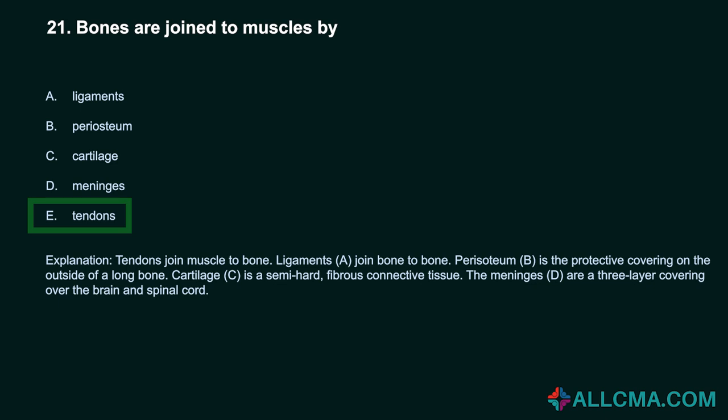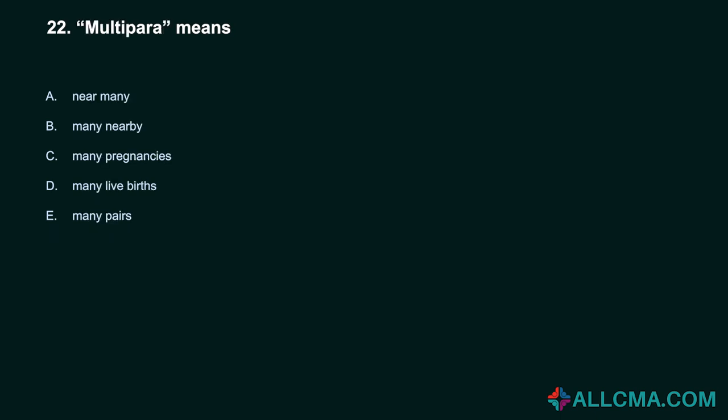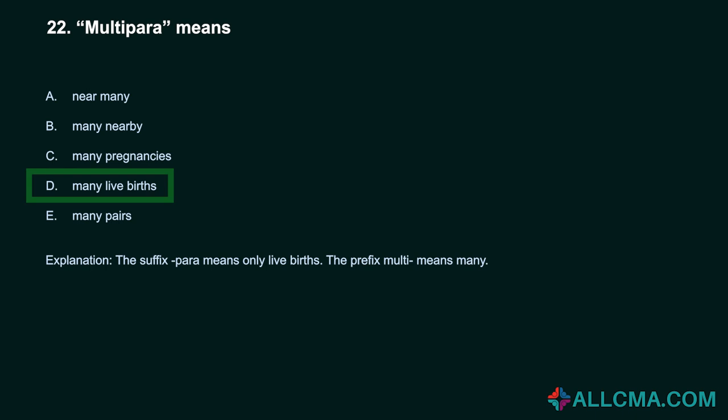Question 22: Multipara means: A. Near many. B. Many nearby. C. Many pregnancies. D. Many live births. E. Many pairs. Correct answer: D. Many live births. The suffix -para means only live births. The prefix multi- means many.